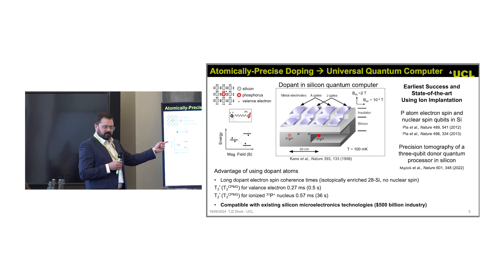There was a proposal in 1998 by Bruce Kane that said if you can position individual dopants in silicon 20 nanometers apart, 20 nanometers below the surface, put some gates on, add some AC and DC global magnetic fields, cool it down, then you can make a quantum computer. This is the challenge now to try to position individual dopants in silicon with atomic precision.